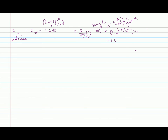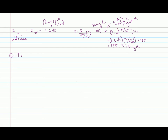Plugging in: 1.645 times 5 over the square root of 600, plus 185, gives a cutoff of 185.336 yards. Kramer only has to average about one third of a yard—roughly one foot—more than his previous average in order to reject the null hypothesis when hitting 600 golf balls. That is our step one result.